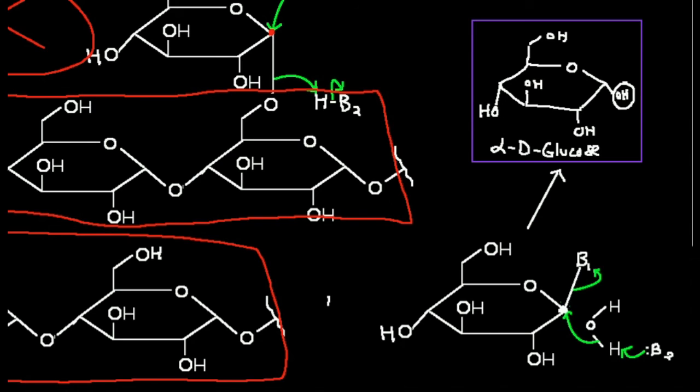This glucose will essentially have to then be phosphorylated by hexokinase, and then it will be in the form of glucose 6-phosphate, which can enter glycolysis. So a key difference between the debranching enzyme and glycogen phosphorylase is glycogen phosphorylase releases glucose 1-phosphate units. The debranching enzyme only releases simple glucose units.